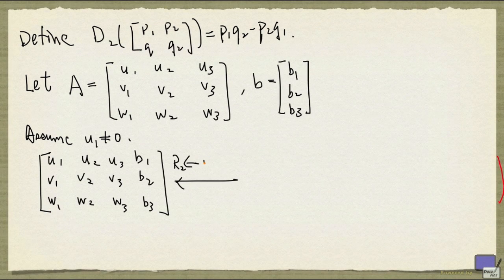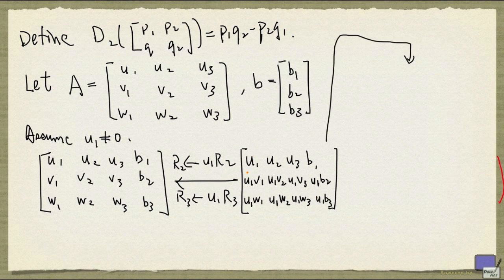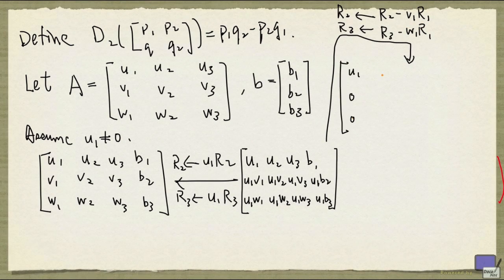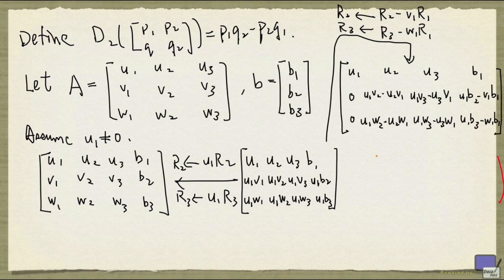So we'll row reduce the augmented matrix. First, we're going to replace row 2 by u1 times row 2, and row 3 by u1 times row 3. And then we are going to clear out the entries under u1. Now, if you look at rows 2 and 3, they give you a system involving only x2 and x3, which in turn is a square system. And that system will have a unique solution, because it cannot have more than one solution. For each solution, we can extend it to a solution to the original system by using the first equation to set x1 to an appropriate value. So we can apply the previous result to this smaller system and obtain values for x2 and x3.